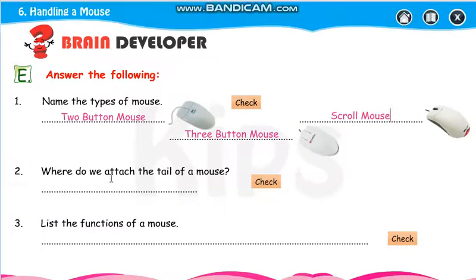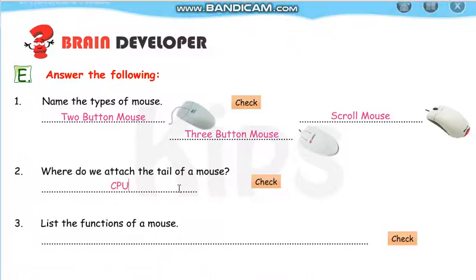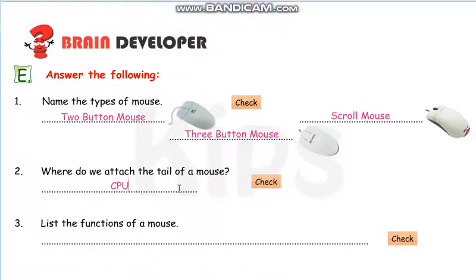Where do we attach the tail of a mouse? Write CPU — in capitals, because it is a short form. The full form is central processing unit.